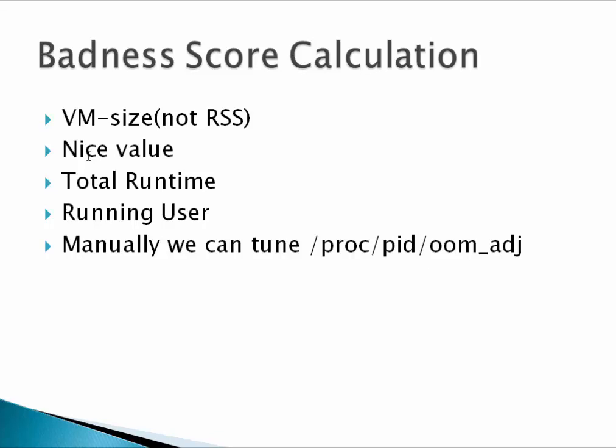If you want some processes to be immune or not to be killed by the OOM killer, you can tune this manually. Some of the factors taken into consideration include VM size or virtual memory size. If your process is spawning a number of children, the cumulative sum of all those processes is also taken into account.